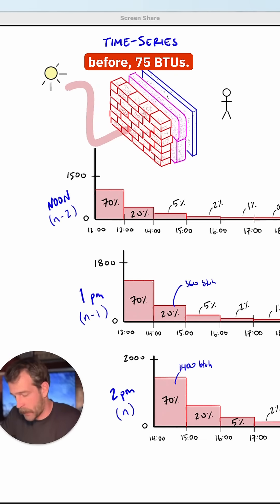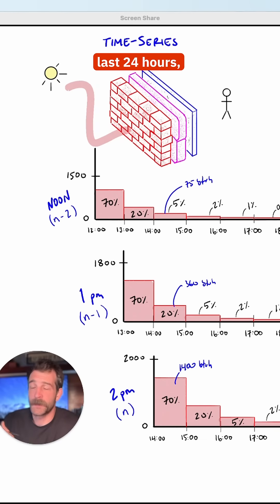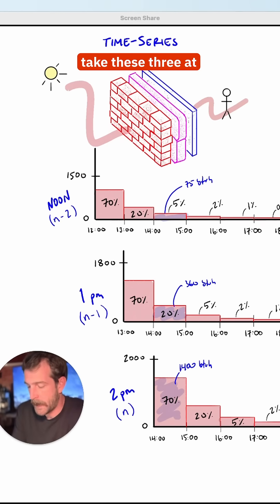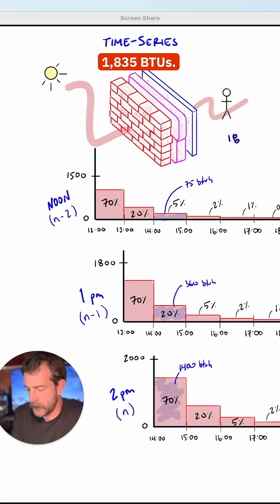And then likewise for the hour before, 75 BTUs. And imagine I did this for the last 24 hours, figuring out the load at that time, and then plotting the time series to see how much is entering my space. If I just take these three at 2 p.m., I'm looking at 1,835 BTUs.